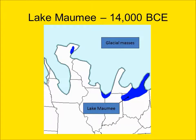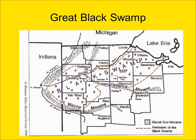This map depicts glacial Lake Maumee, which was a precursor of the present-day Lake Erie. The lake formed approximately 14,000 years ago, and its presence changed the geography of northwest Ohio, southeastern Michigan, and eastern Indiana. One of the effects of the receding waters and ice associated with Lake Maumee was the creation of what became known as the Great Black Swamp.